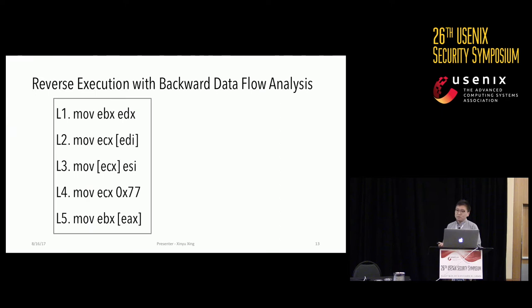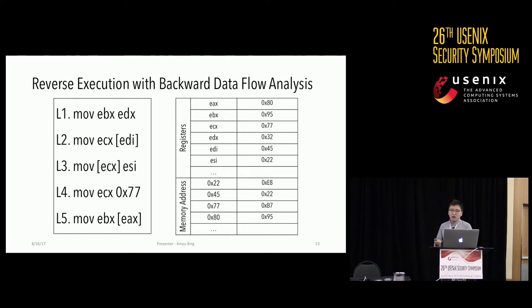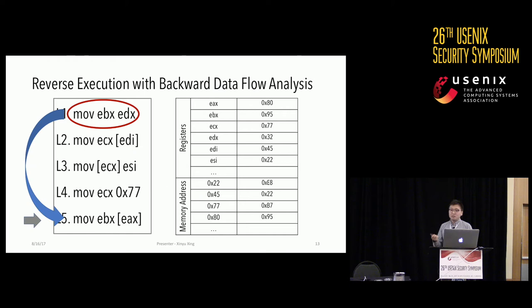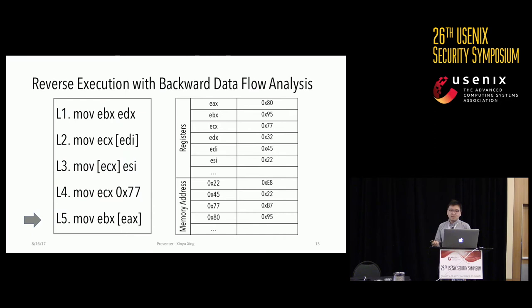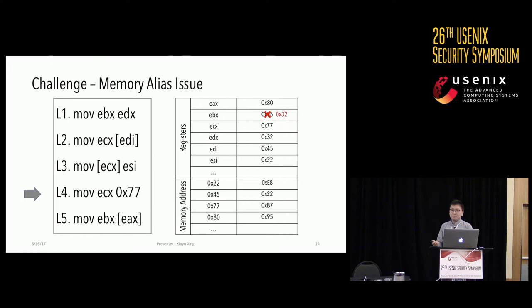Consider this example: assume this is an instruction trace logged and restored using Intel PT, and this is the crashing memory snapshot. We perform reverse execution starting from crashing instruction L5. The MOV instruction overrides the value of EBX, so we cannot directly invert it. But using data flow analysis, we can determine that the definition of EBX reaches the crashing instruction without blocking, meaning EBX equals EDX before L5. We then update the memory status and move the program counter backward.